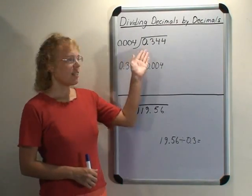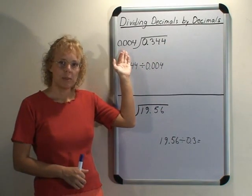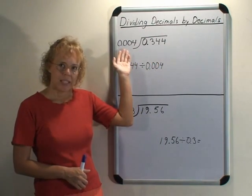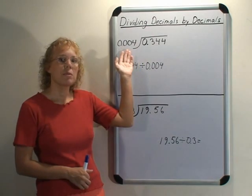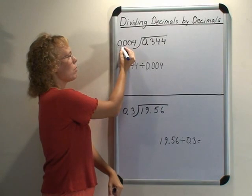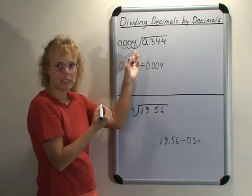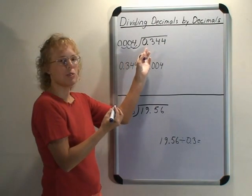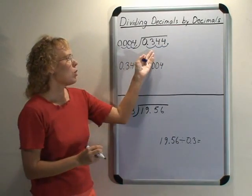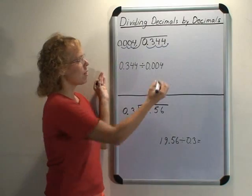To divide a decimal number by a decimal number, we're supposed to move the decimal point in both the dividend and the divisor however many steps necessary so that the divisor becomes a whole number. So here the decimal point would move one, two, three steps, so we get 4 as a divisor. And we need to move it three steps here too. So our problem becomes 344 divided by 4. I'm gonna write it here now.